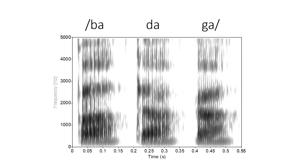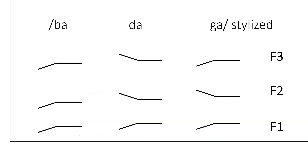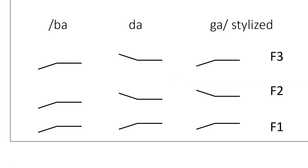Here we have the three voiced stops at different places of articulation in English: BA, DA, and GA. If we look at the movement of F1, F2, and F3 in these productions, we have a pattern where each one is distinct from the other. A stylized version of those formant transitions is shown here. In the case of BA, the first formant rises from the BA into the A for all three formants. In the case of DA, the second and third formants come down because of co-articulation with the DA leading into the A. And in GA, the second and third formants seem to come from a kind of similar middle location between the two before heading to the formant values for the A vowel.